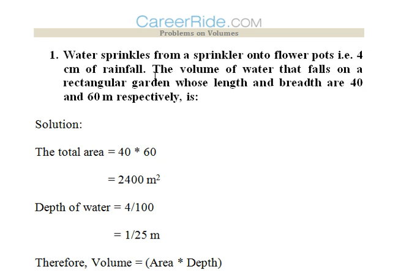Now, 4 cm of the rainfall is the depth of the water. So firstly, we will convert this centimeter into meter. So 4 by 100 just because 100 cm goes to forming 1 meter. So 1 by 25 m would be the depth.